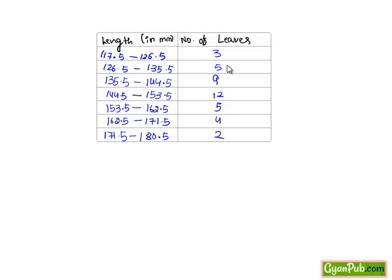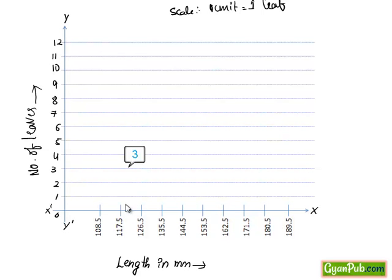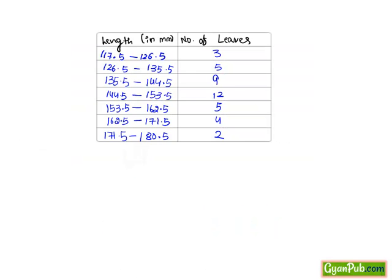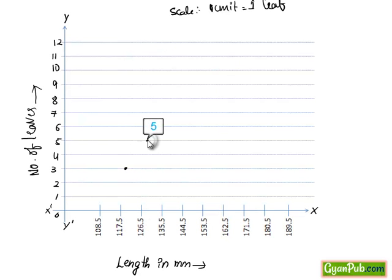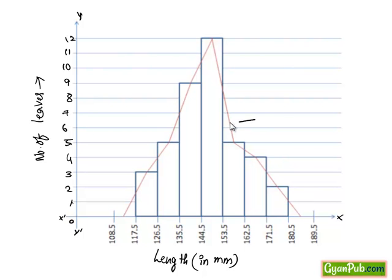Now taking the first value, that is number of leaves is 3 which is in between 117.5 to 126.5, we plot a graph. Similarly if we plot we get the dots as follows. And if we join these we get the graph. Now taking the bar diagrams in between these, we get the total graph as follows, in which it is known as frequency polygon.